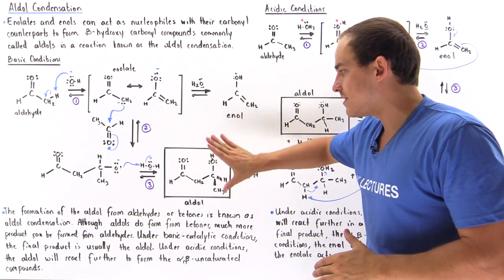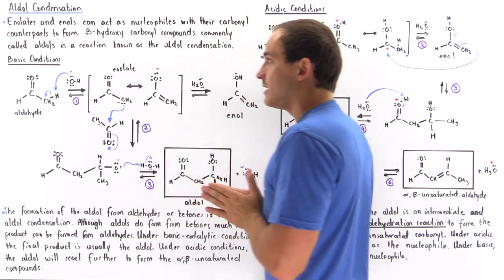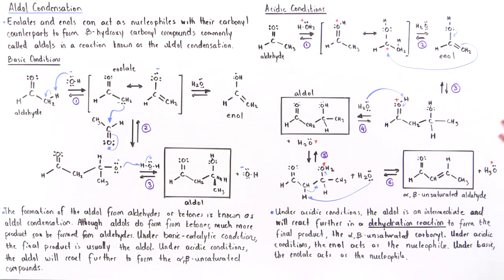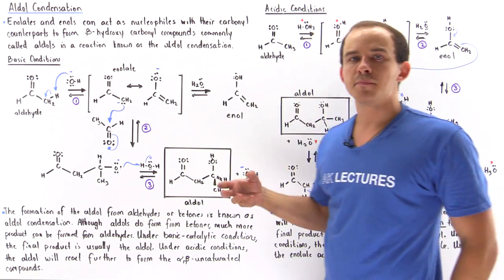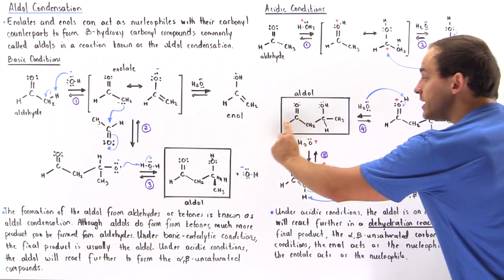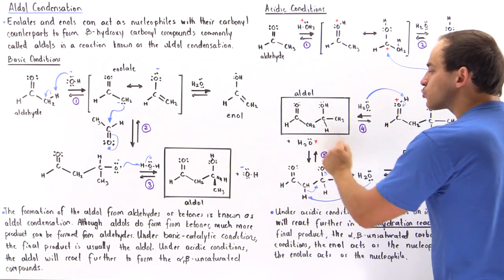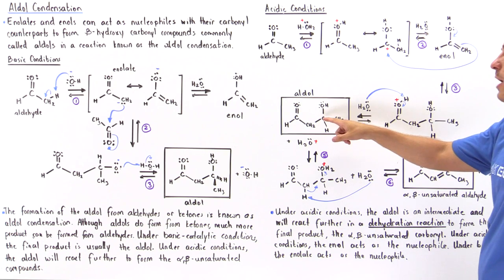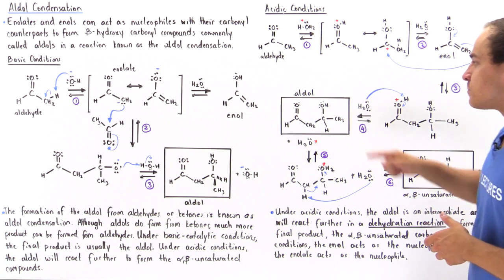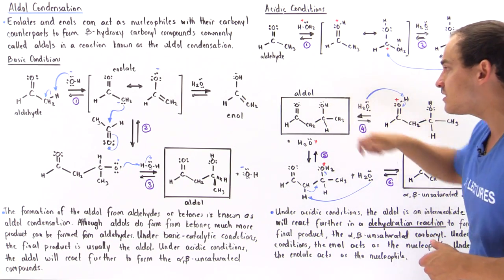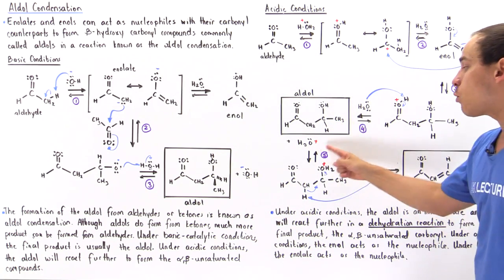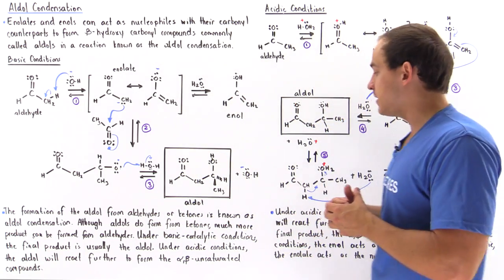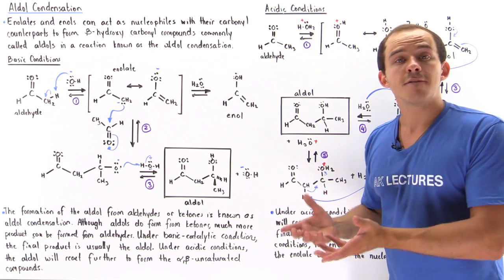This is essentially the same aldol structure as under basic conditions. The only difference is that under basic conditions this is the final product — we can isolate it — but under acidic conditions this is not the final product, it is simply an intermediate. Under acidic conditions we have the acid catalyst, the hydronium, which will protonate the oxygen of the hydroxyl group attached to our beta-carbon position. By protonating this oxygen in step five, we convert the hydroxy group into a very good leaving group — our water group — and a dehydration reaction takes place. Dehydration simply means the loss of a water molecule.